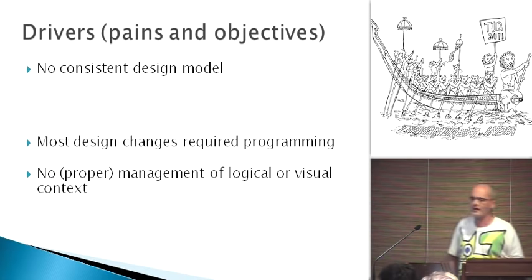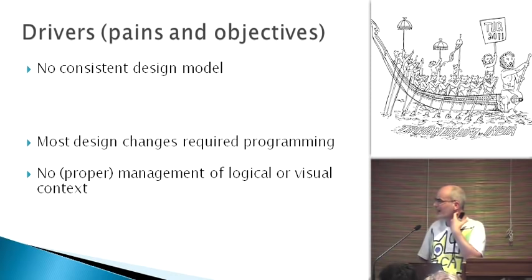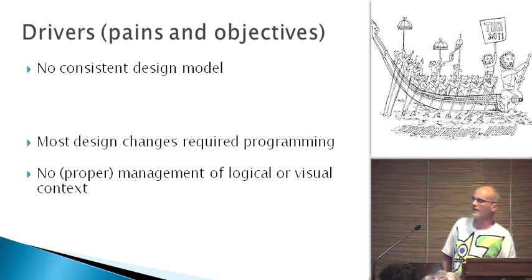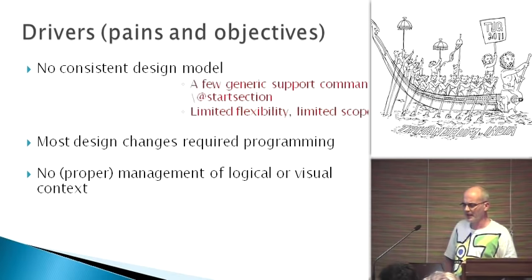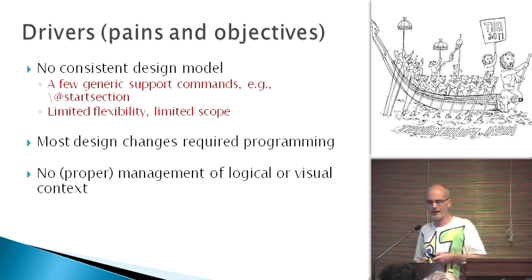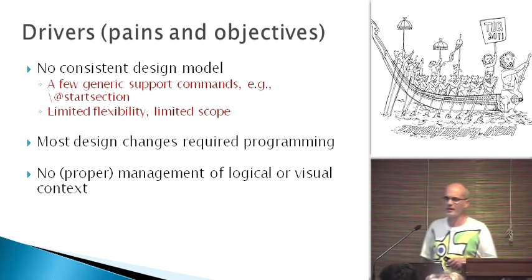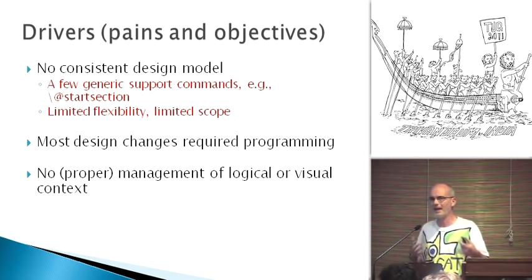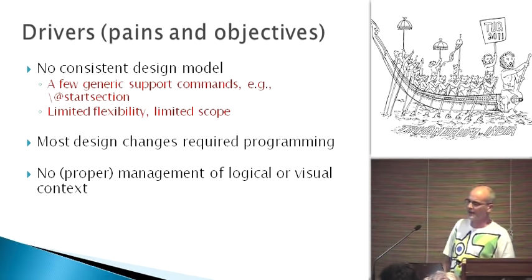So what was this kind of architecture that we were trying to do? What were the drivers? One of the important drivers was that there was no consistent design model. You have a bunch of generic commands like start section and concepts like this, but very limited flexibility and limited scope. As a result, whenever you try to build a design that is not already given by somebody else, you have to go into programming. You are actually writing a lot of backslashes and debug it afterwards.